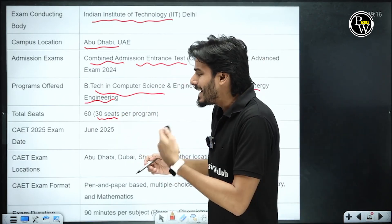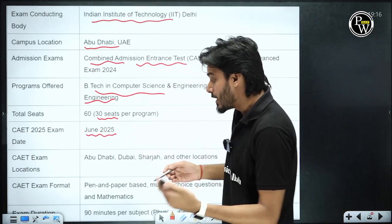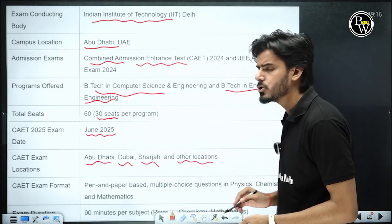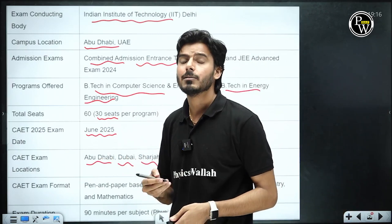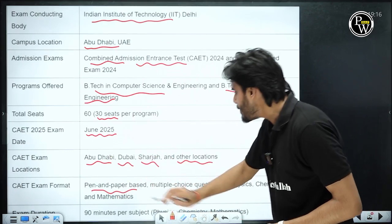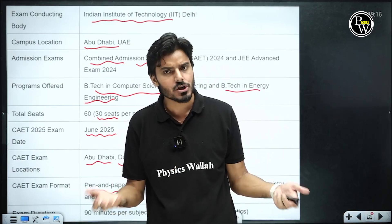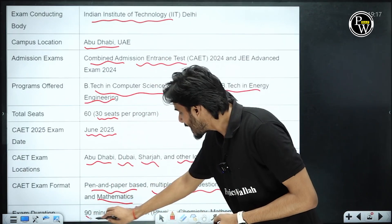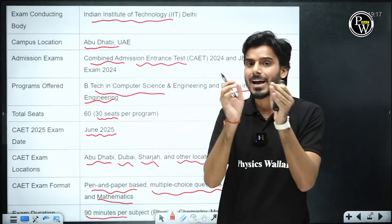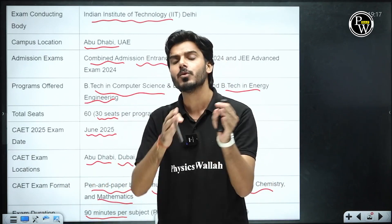The tentative exam date for CAET 2025 admissions is June 2025. The exam locations are Abu Dhabi, Dubai, and Sharjah. You may find other locations on the official website of IIT Delhi Abu Dhabi campus. The exam format is pen-and-paper-based multiple-choice questions in Physics, Chemistry, and Mathematics — similar to IIT JEE. The duration will be 90 minutes per subject.